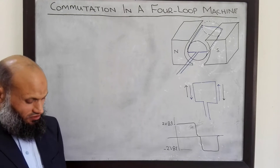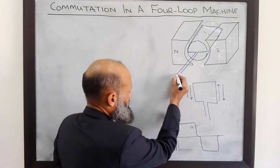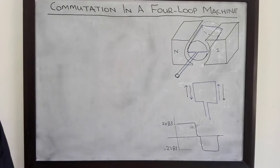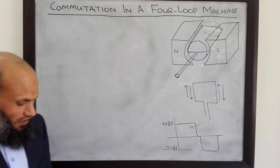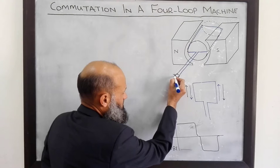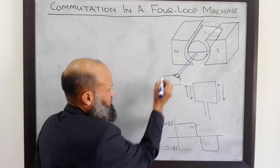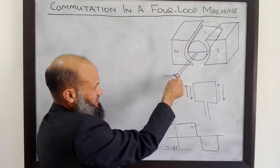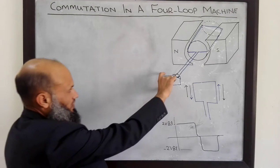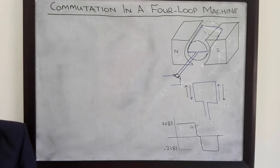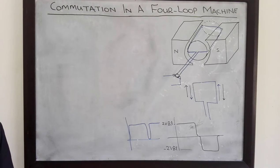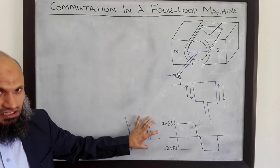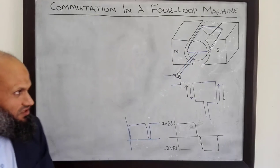The arrangement we learned in the last lecture was to insert commutator segments — split rings. We placed a split ring, and each side of this coil was connected to this split ring, with brushes placed over it. These brushes are in electrical contact with this coil, and as the coil rotates, the contacts with the brushes also rotate. Therefore, at the output we get a unidirectional voltage signal — not pure DC, but a unidirectional voltage signal.